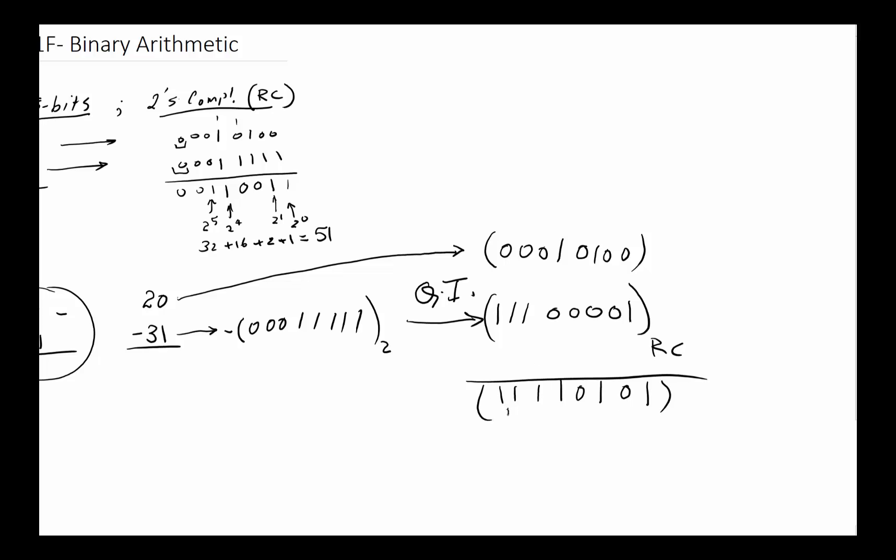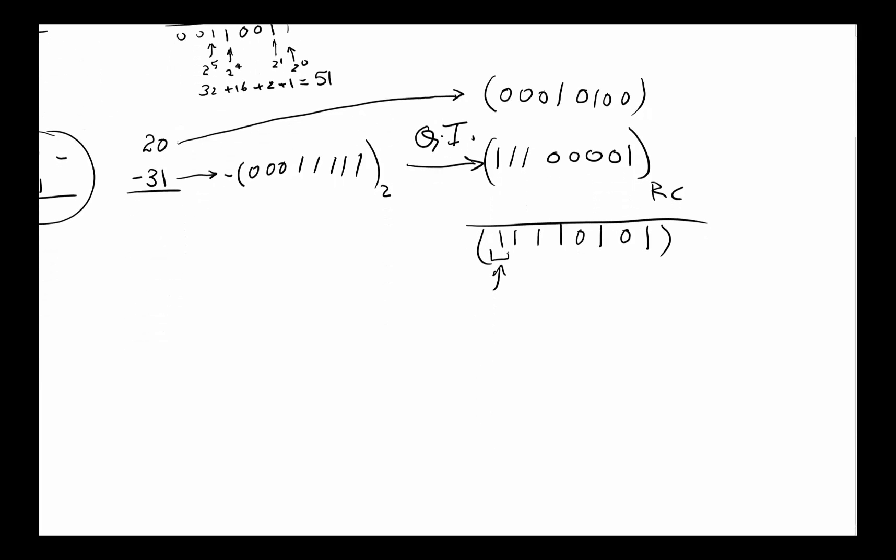But notice the most significant bit is 1, which means that this is a negative number, which means I've got to do 2's complement to bring it out of 2's complement so I know what number I'm looking at. So if I do that, this is going to be minus, and then I'm going to do 2's complement.